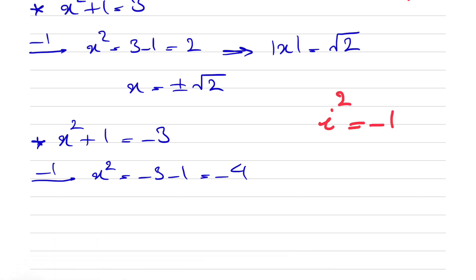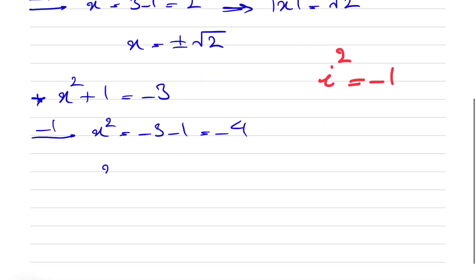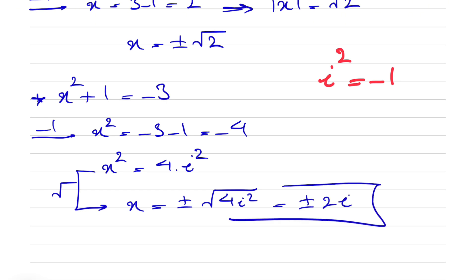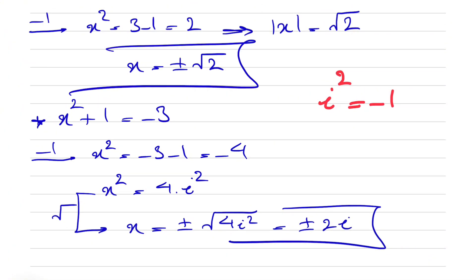We use the fact that i² = -1, so x² = 4i². Taking the square root on each side — keeping in mind we get ± — gives us x = ±2i.